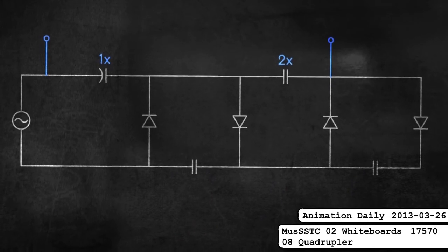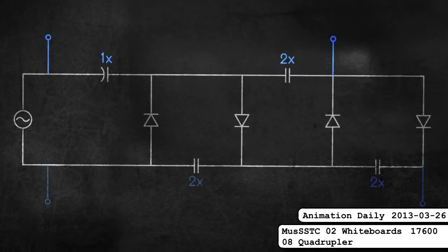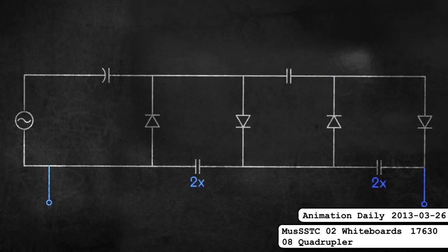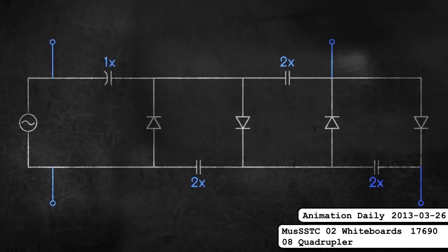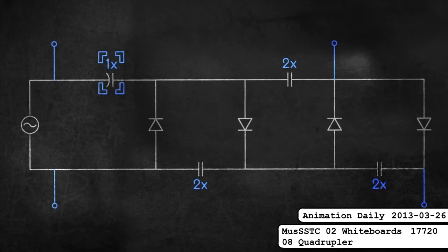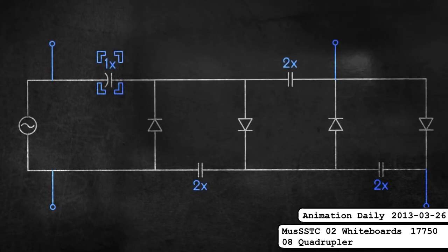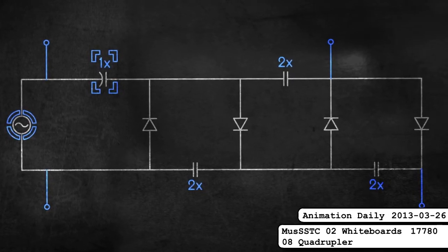This is the part about quadruplers, which is really brief — just add another one and it's a quadrupler. It changes how you tap it, it's rather simple, and I like the symbol.